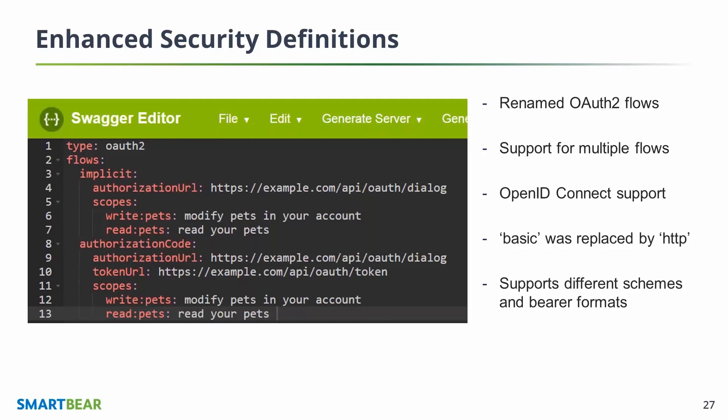Instead of just having basic authentication, we changed that to HTTP-based authentication. There are official schemes defined: basic is one of them, digest is another, and bearer is a third. When it comes to bearer, we even allow you to specify what kind of bearer token is being used — so for everyone who uses JWT, you can describe it a lot more easily now. That's great news for a lot of our users.